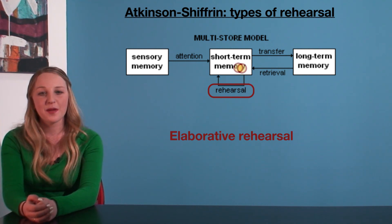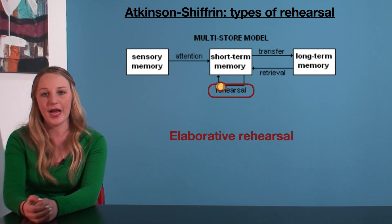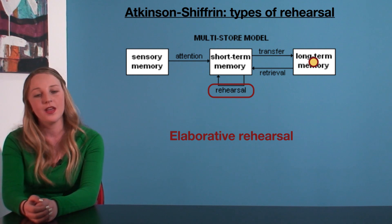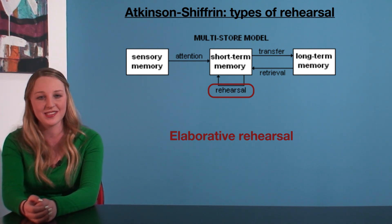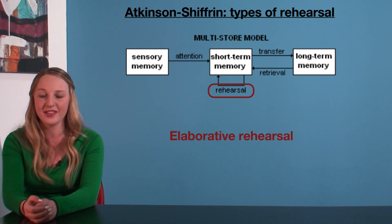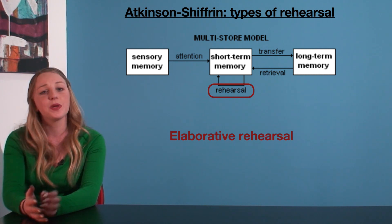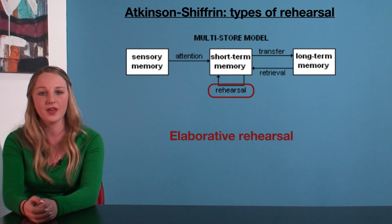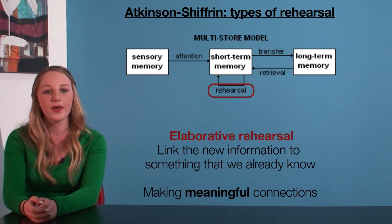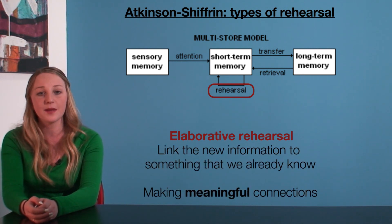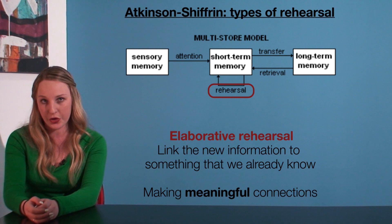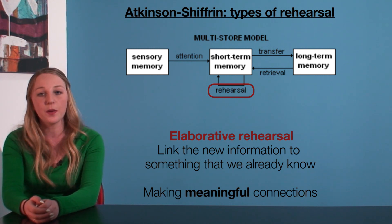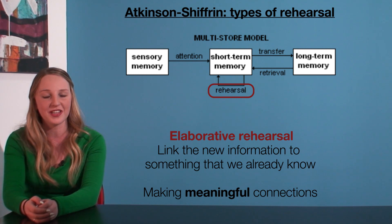Elaborative rehearsal is what's required for information to become encoded into long-term memory. Elaborative rehearsal is, as the name suggests, more elaborate than maintenance rehearsal. We're doing more than simply repeating information over and over again. In elaborative rehearsal, we're linking the new information to something that we already know. We're making meaningful connections — this is what helps us to remember the information in the long term.